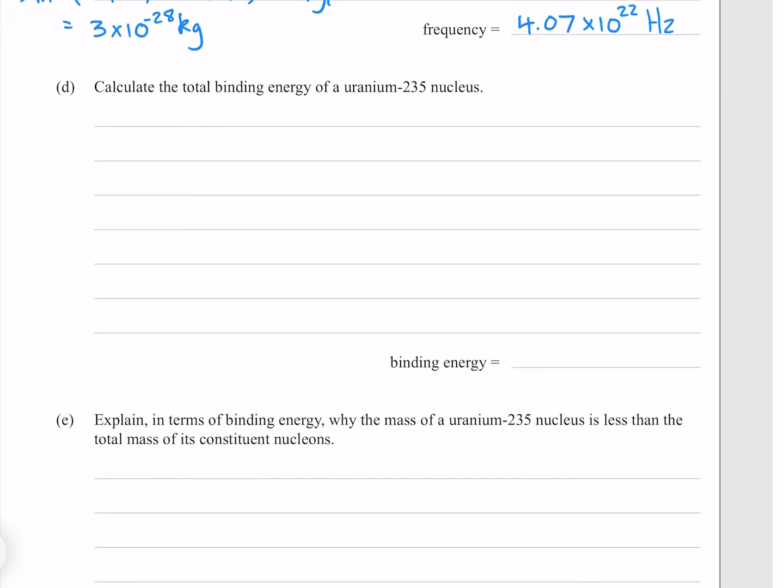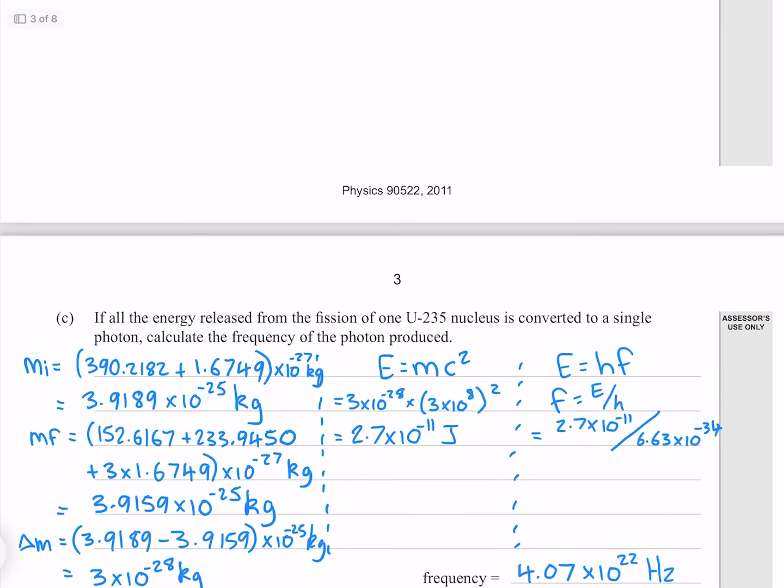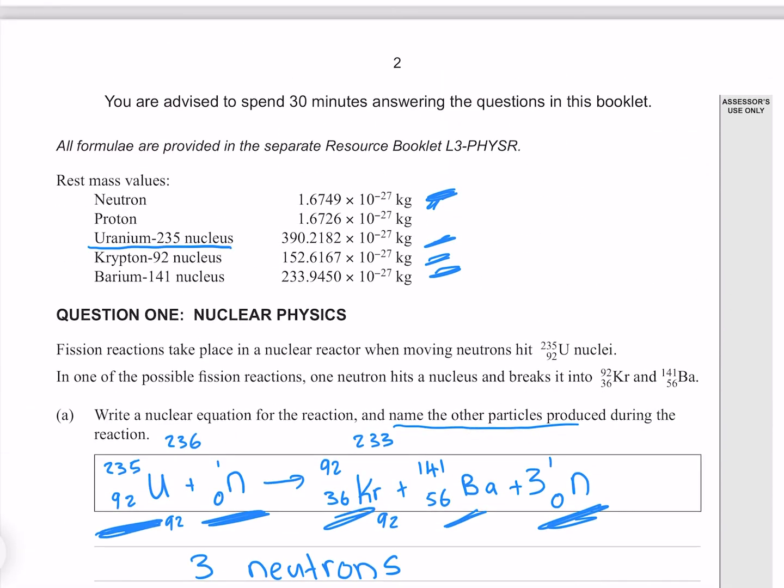Calculate the total binding energy of a uranium-235 nucleus. To find the total binding energy, we need to take the mass of the nucleus when it's bound together, which we're already given all the way up here, and the mass of all the parts when they're unbound.